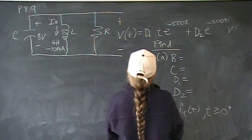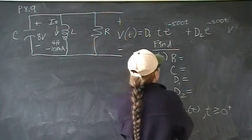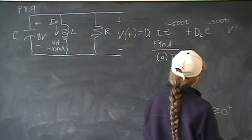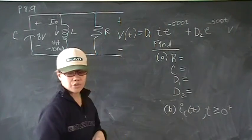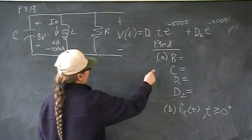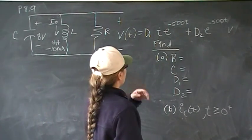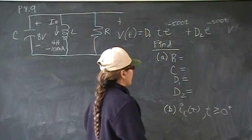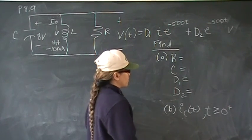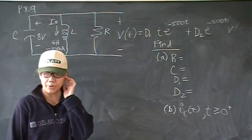We have part of the general equation: D1 t e to the negative 500t plus D2 e to the negative 500t volts. We have to find R resistance, capacitance, the coefficients D1 and the coefficient D2. And in part B, we need to find the current, the general equation for the current through the capacitor.